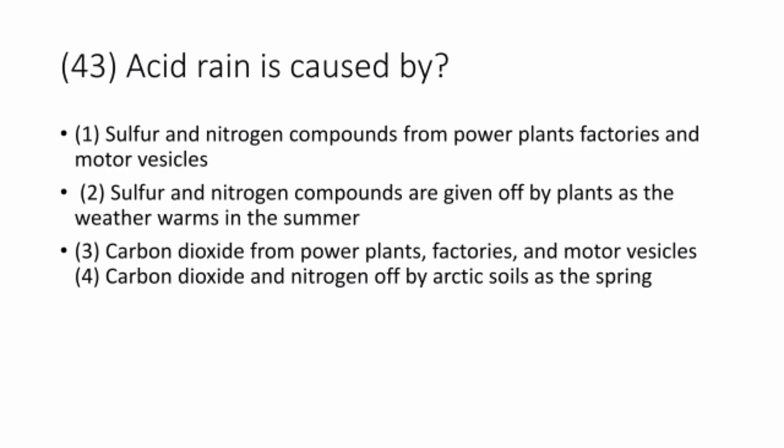Question 43. Acid rain is caused by sulphur and nitrogen compounds from power plants, factories, and motor vehicles. Option 1 is the correct answer.